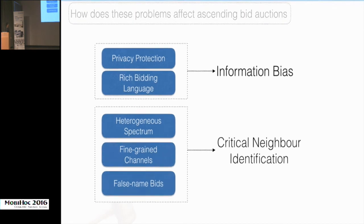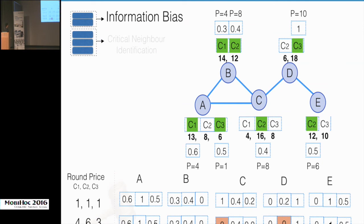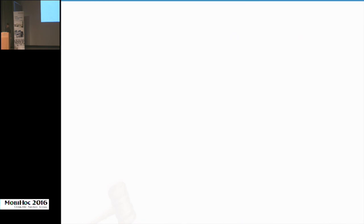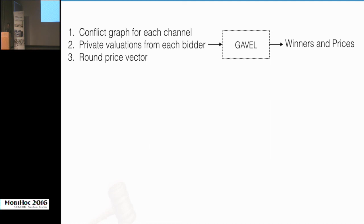GAVEL avoids both core problems. Regarding information bias: the auction ends at the second-highest price and doesn't proceed further, so even though A's valuation for C1 was 13, the auction ended at four — the auctioneer never learns the highest bid. Bidders can also gauge market prices through observed demand, enabling price discovery. Regarding critical neighbor identification: the price at which excess demand disappears is exactly the selling price, so there is never any need to explicitly identify critical neighbors.